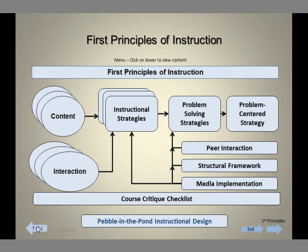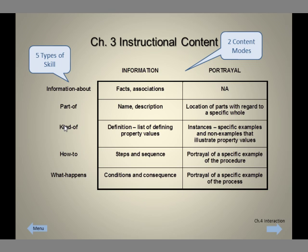Starting in Chapter 3, we lay a foundation for first principles. If we're going to discuss instruction in detail, we need to have a way to describe that instruction. Chapter 3, labeled instructional content, identifies five types of skill: information about, parts of, kind of, how to, and what happens. It also indicates some of the content elements that are associated with each of these kinds of skill. These elements can be represented at two levels — an information level, which is a general level, and a portrayal level, which is a specific or example level. This chapter elaborates and illustrates this way of describing instructional content.